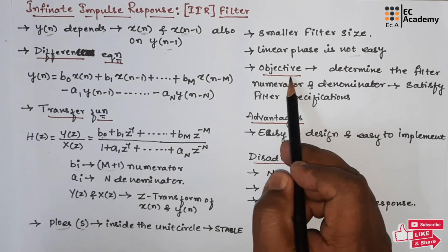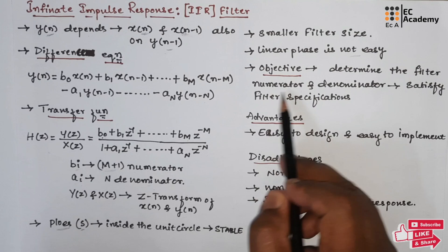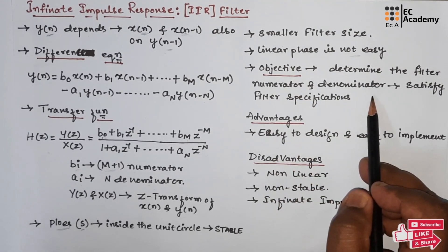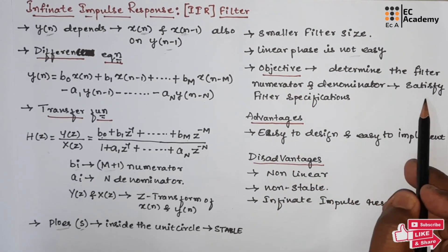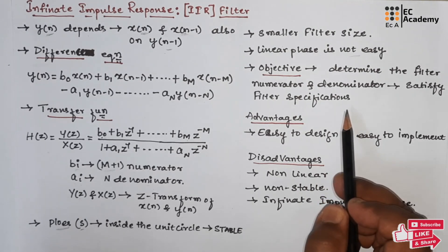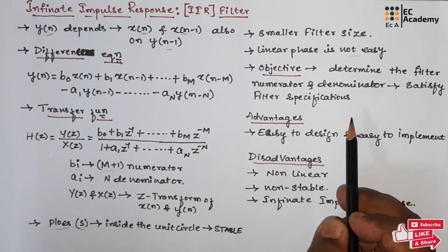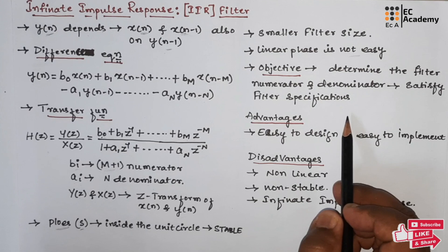The main objective of IIR filter design is to determine the filter numerator as well as denominator coefficients to satisfy filter specifications such as pass band gain and stop band attenuation, as well as cutoff frequency for low pass, high pass, band pass, and band stop filters.